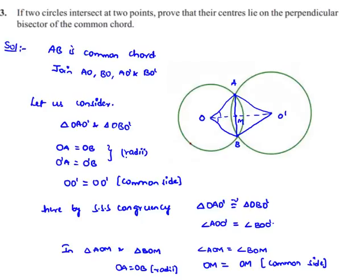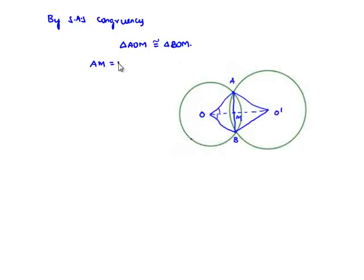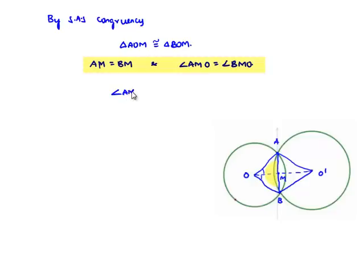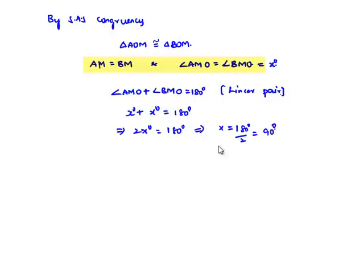When two triangles are congruent, their corresponding sides and angles can be equated. Therefore, AM is equal to BM, and angle AMO is equal to angle BMO. But angle AMO and angle BMO form a linear pair. Therefore, the sum of angle AMO plus angle BMO equals 180 degrees. Let each be X degrees. Then X plus X equals 180 degrees, which implies 2X equals 180 degrees, so X equals 90 degrees. Therefore, angle AMO is equal to angle BMO is equal to 90 degrees.